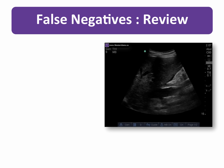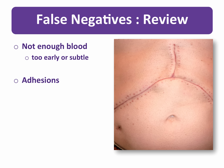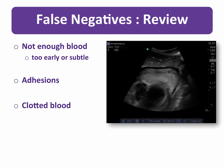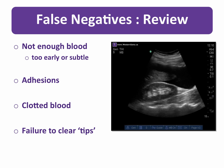Let's recap some of the potential false negatives you must guard against when performing FAST examinations. First, there may not be enough blood to be detected — less than roughly 200 cc — and therefore free fluid may be missed; adding the pelvic views will improve your chances of avoiding this error. Second, adhesions have blocked the free flow of fluid so it is not accumulating where we expect to see it. Third, the blood is clotted and is no longer anechoic. And last, failure to clear the tips — scanning only the interface and missing free fluid around the caudal tip of the liver or spleen, or at the so-called six-to-nine view of the left upper quadrant.